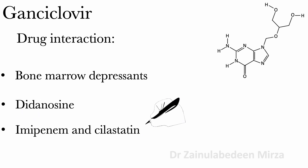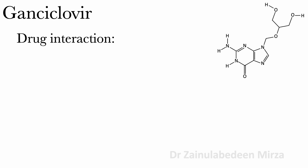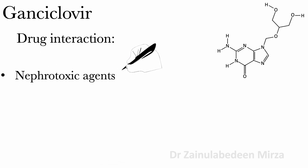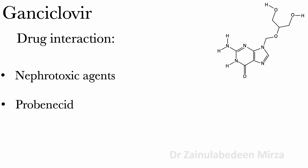Ayn Bainem and cytocetin may increase risk of seizure. Nephrotoxic agents may cause added risk of nephrotoxicity. Probenocyte may decrease the clearance of GAN Cyclophere. Zedofordyne may increase risk of hepatotoxicity.